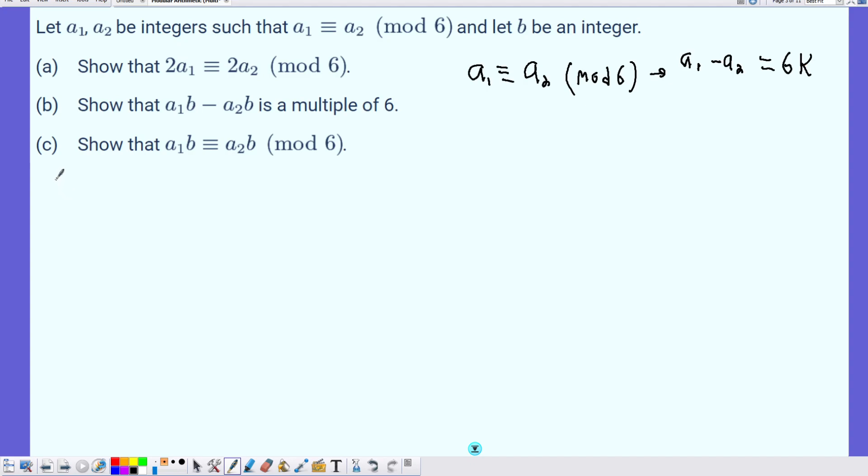Now, let's tackle Part A. Let's use the fact that we know that the difference of A1 minus A2 is a multiple of 6, times some integer. But the important part is that it's a multiple of 6.